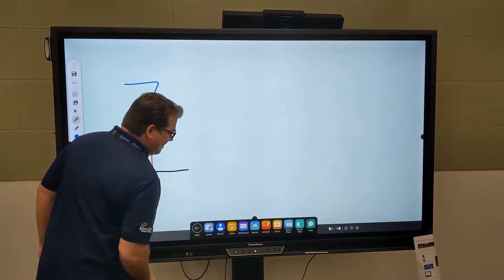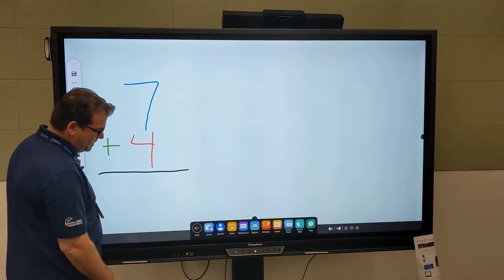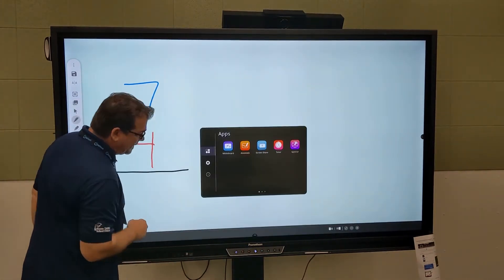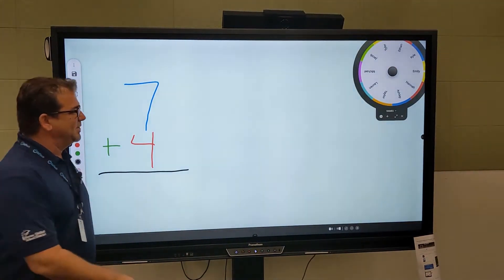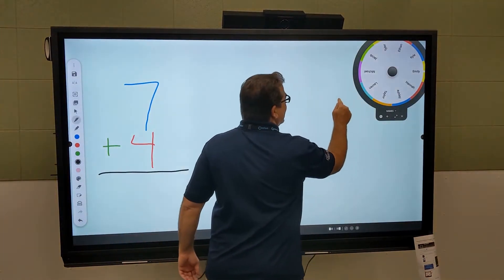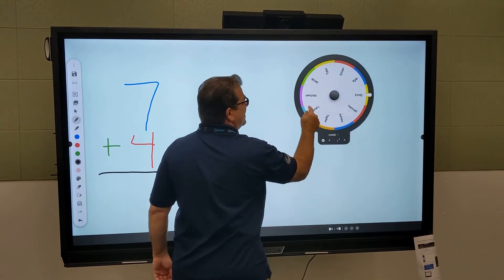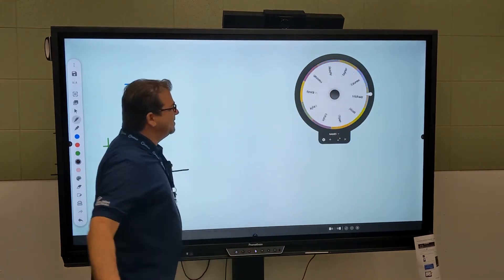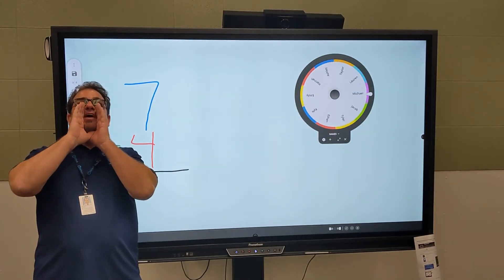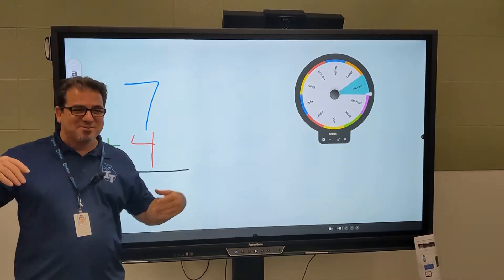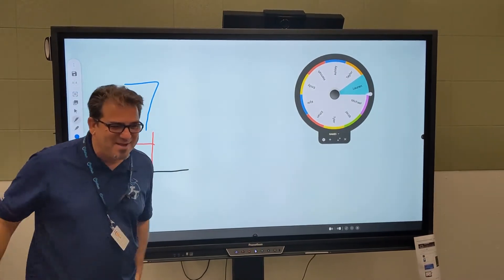All right, let's now spin our wheel of fortune and see who's going to come up and share. I'll go into my Promethean menu here, I'll go to my locker, and I'll go to my spinner. Here we go, let's give it a spin. Wheel of fortune... Lauren! Congratulations, come on up.